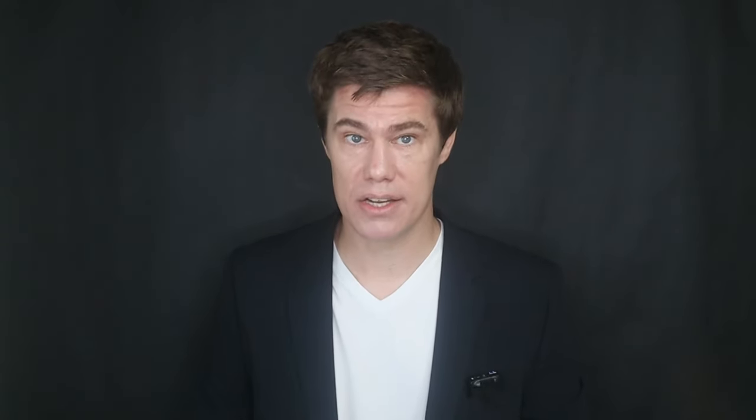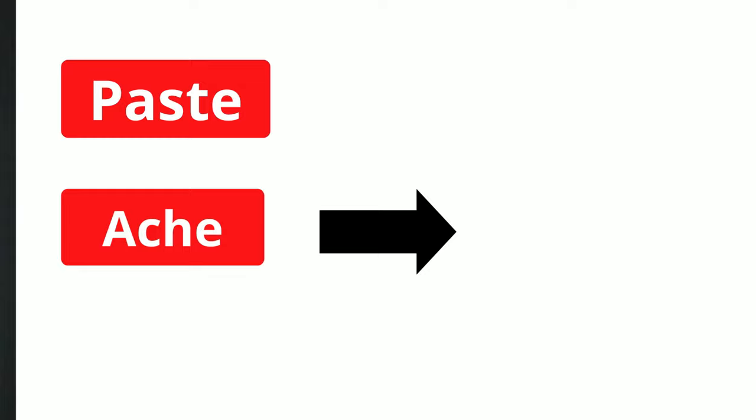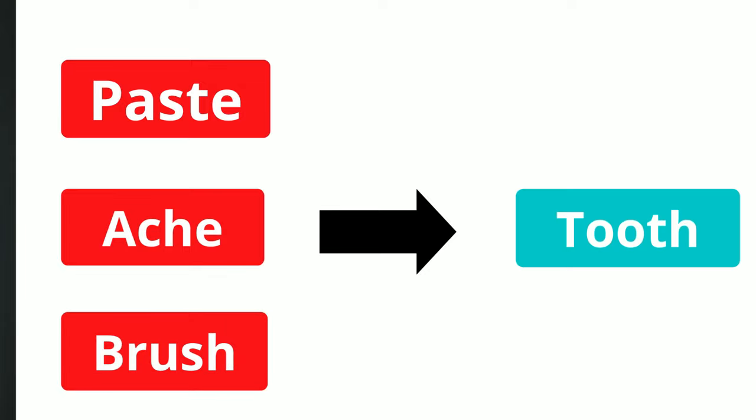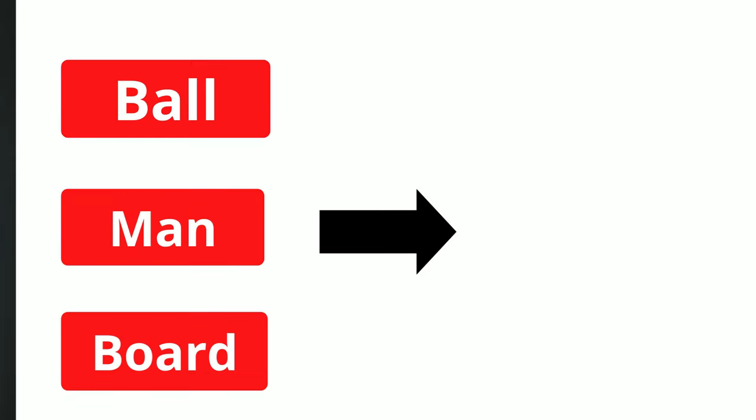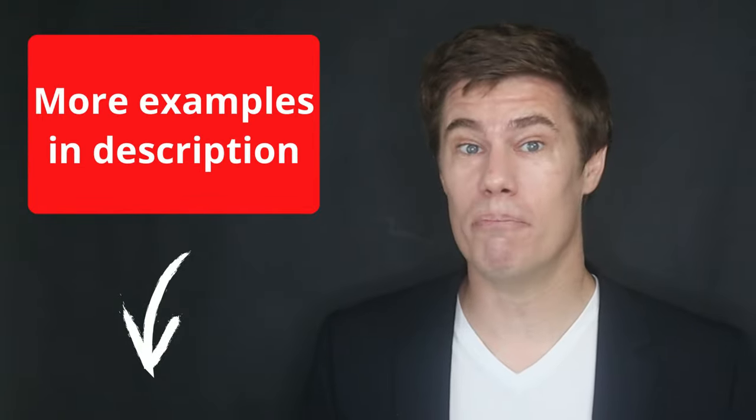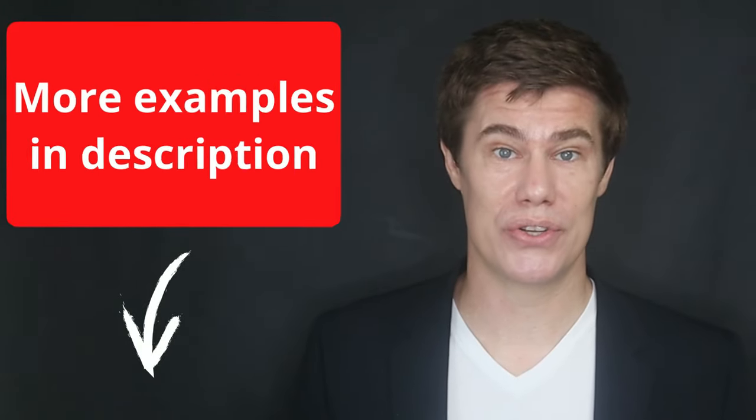Compound words. Choose three to five compound words with the same stem and write them on the board or screen without their stem. Ask your student to figure out what the stem is. For example: paste, ache, brush — the stem would be 'tooth'. Or ball, man, board — the stem is 'snow'. Here are some more that you can use.